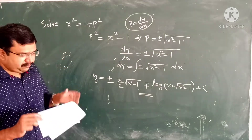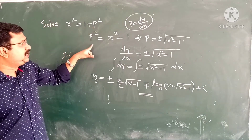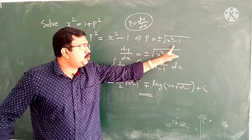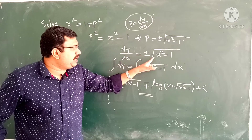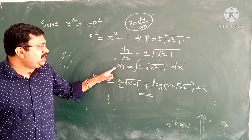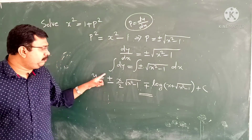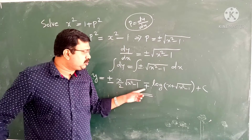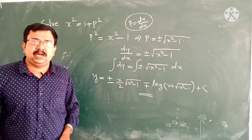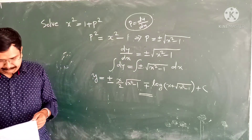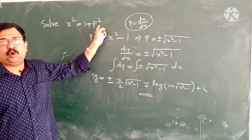To summarize: our given question is x square equal to 1 plus P square. Then P square equal to x square minus 1, then P equal to plus or minus root x square minus 1. Since P is dy by dx, dy by dx equal to plus or minus root x square minus 1. Integrating, y equal to plus or minus x by 2 into root x square minus 1 minus log x plus root x square minus 1 plus c. That is our required solution. Please write down on your notebook.